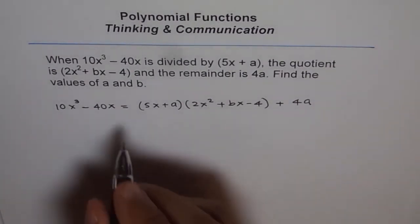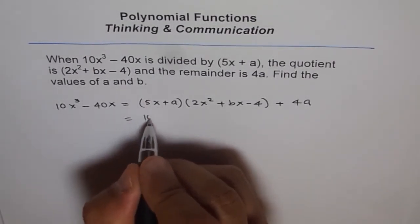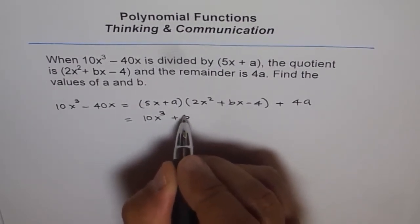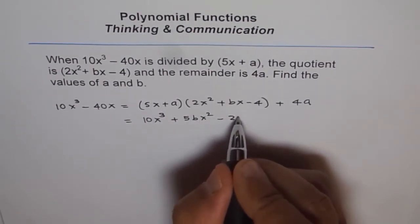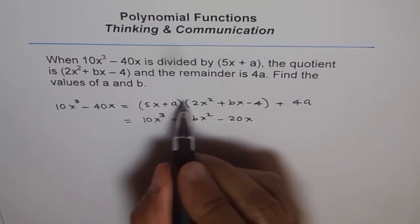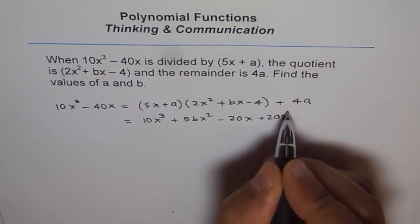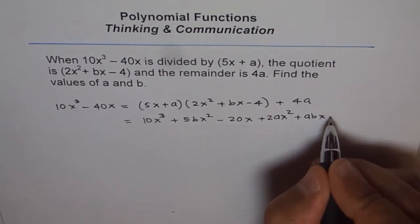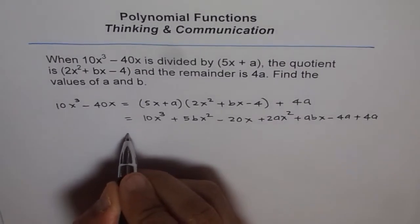Now from here we can expand the right-hand side, and then see what we get. We get 5x times 2x is 10x³, 5x times bx plus 5bx² and with minus 4 we get minus 20x. Let's multiply with a now all the terms. So we get plus 2ax² here, plus abx minus 4a and plus 4a from there.